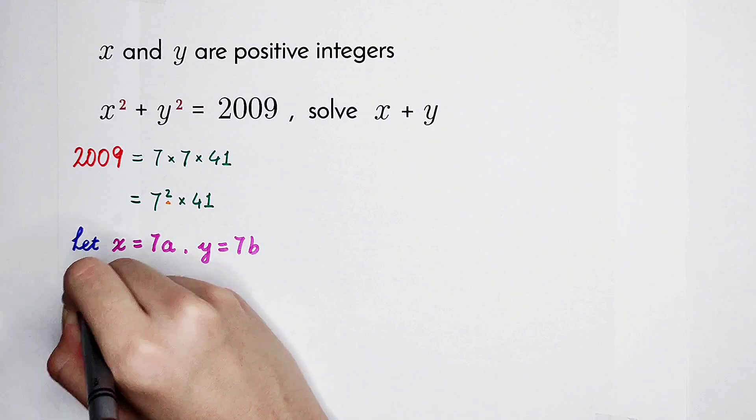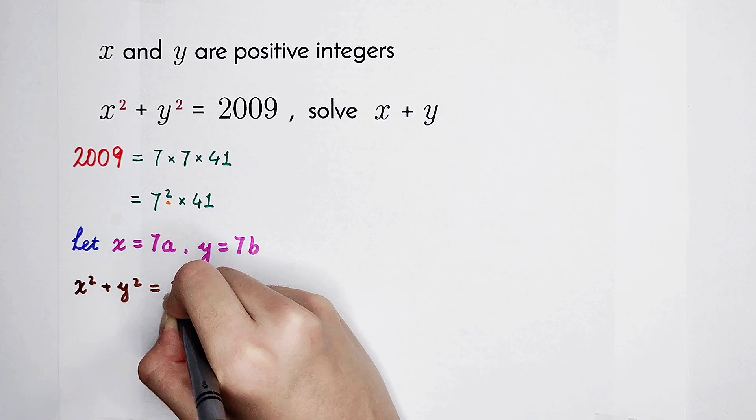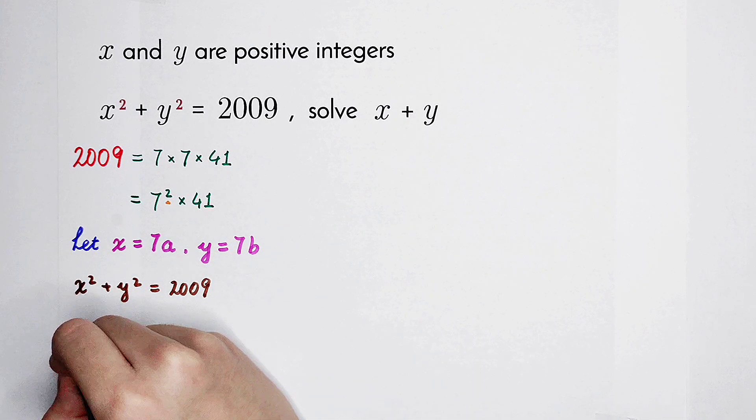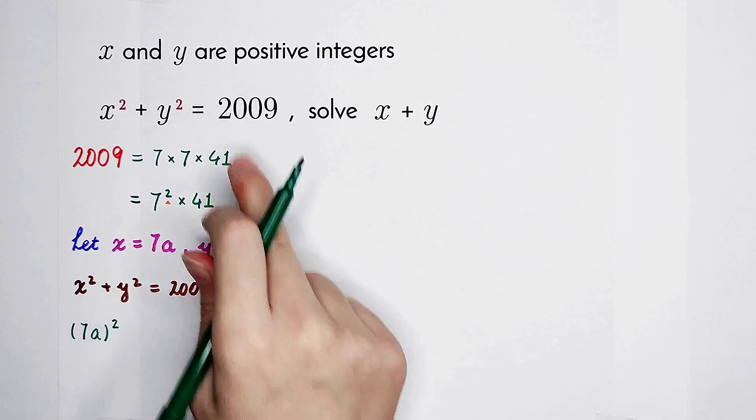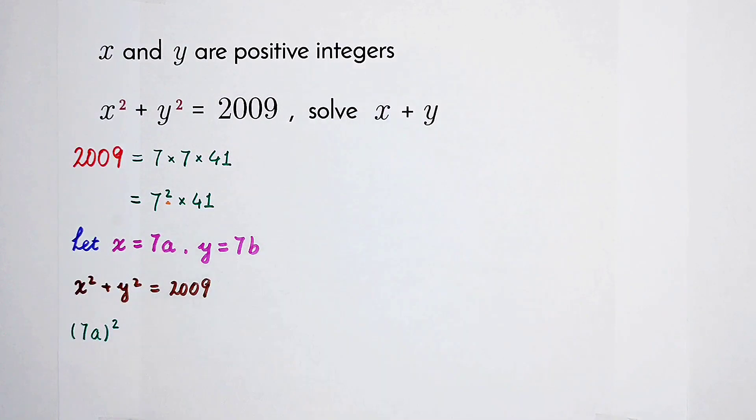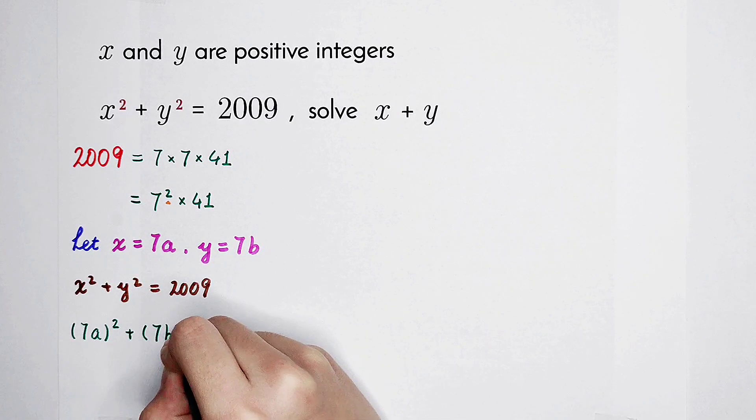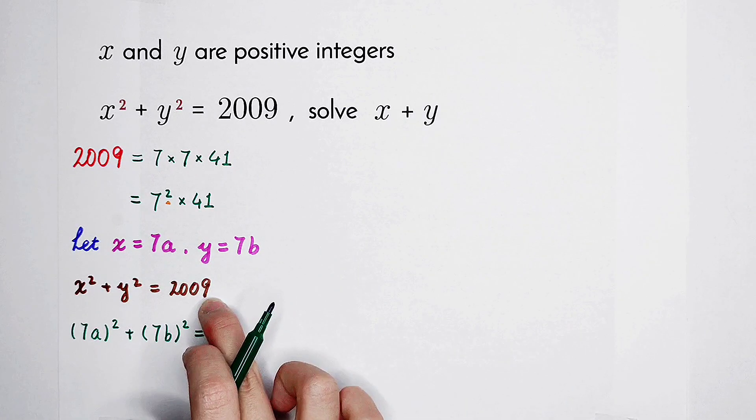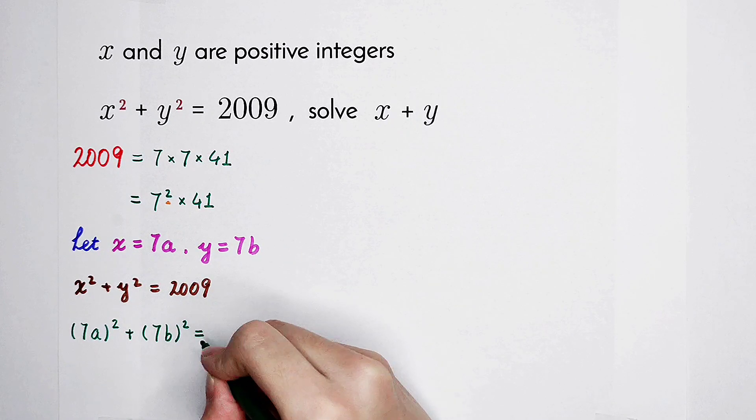Where x is 7 times a, then squared. By the way, a and b are both positive integers, since x and y are positive integers. 7a squared plus 7b squared. This 2009, we have factorized it. 7 squared times 41.